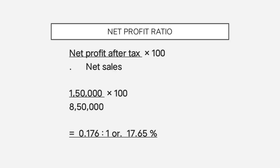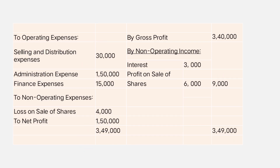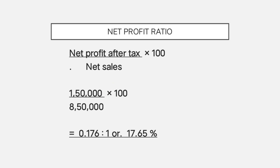Next, net profit ratio. The formula is net profit after tax divided by net sales into 100. Net profit is 1,50,000 divided by net sales 8,50,000 into 100, giving 0.176 to 1, or 17.65%.